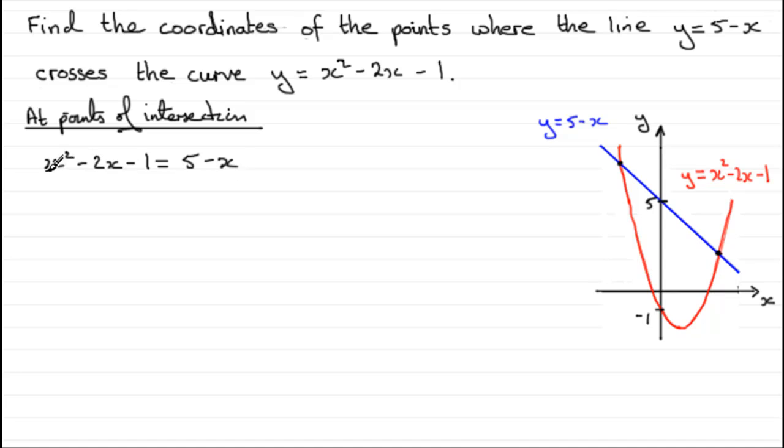So what we've got here is a quadratic equation because we've got the x squared. So we need to rearrange it in the form of x squared and then the x term and then the constant equals 0.